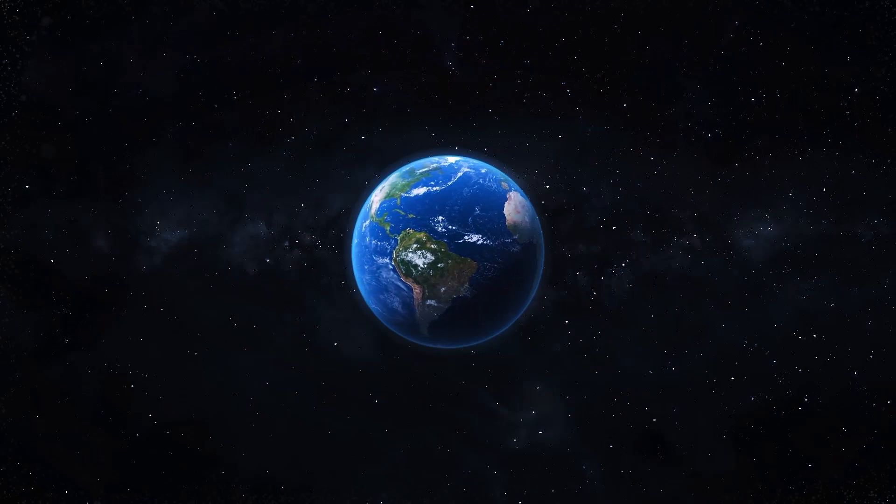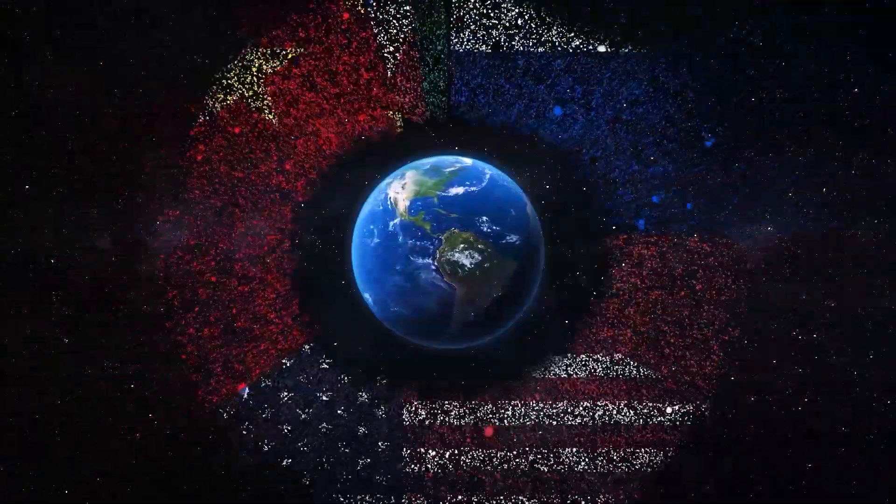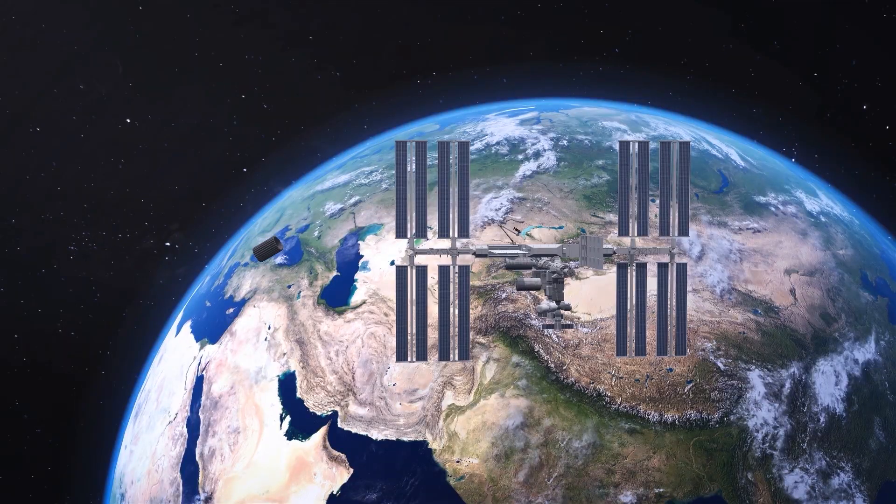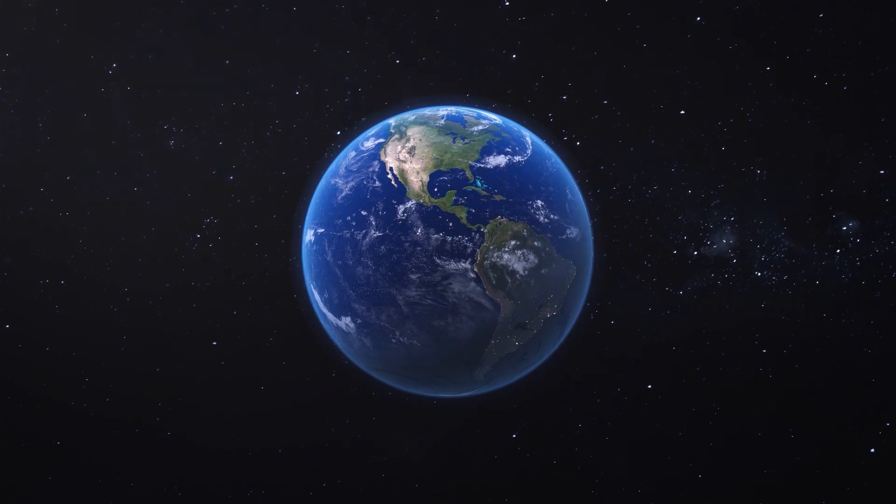More broadly, the BBC says space debris is a rapidly worsening situation, with roughly a million one to ten centimeter objects floating in uncontrolled orbit of Earth, and Time magazine pointing out that much of it is moving at over 17,000 miles per hour.